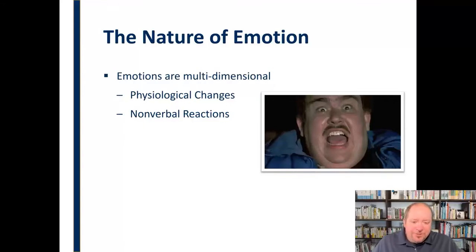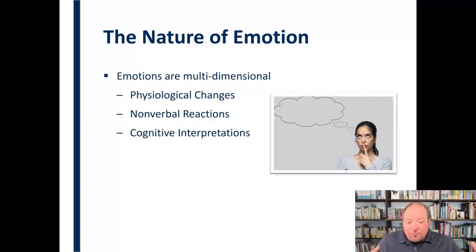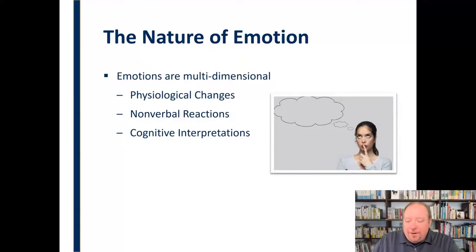The other two dimensions are ones we may not think about quite as much or quite as directly as associated with emotion. The first of those is cognitive interpretations. We have a way of translating emotion — how we experience it and how we express it is largely based on our cognitive interpretation.